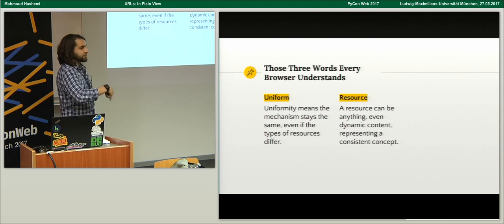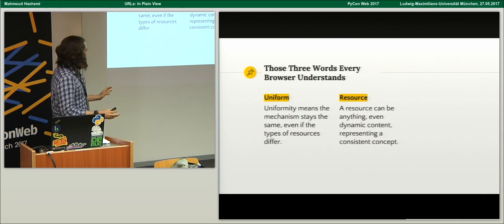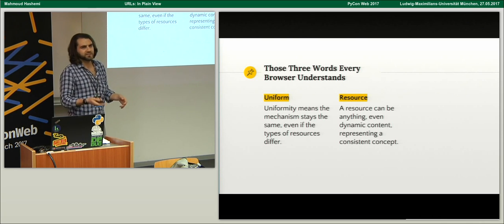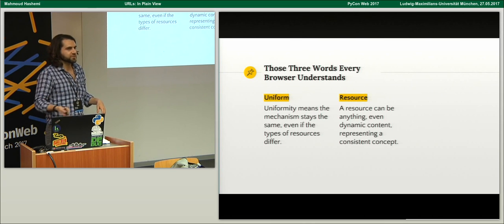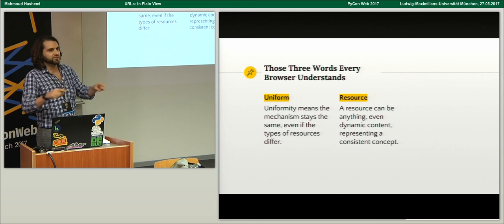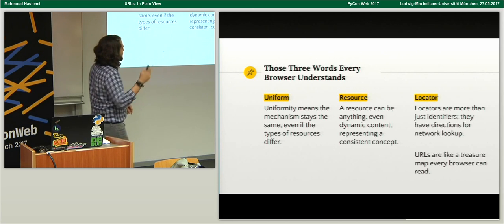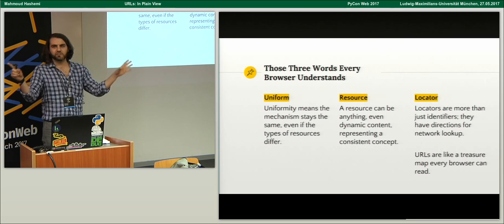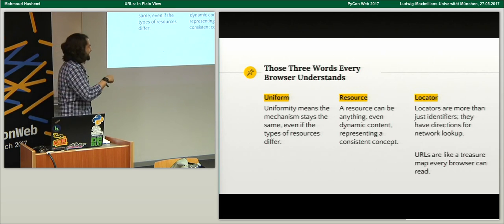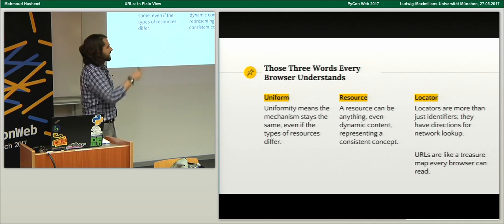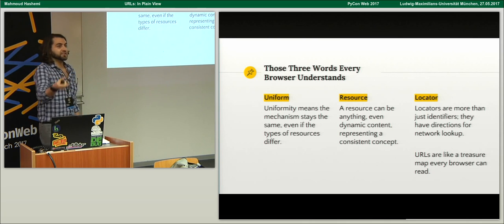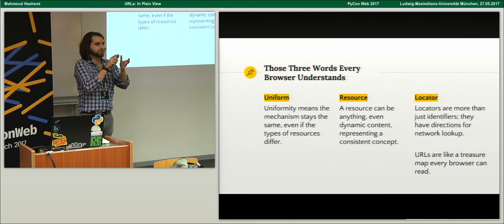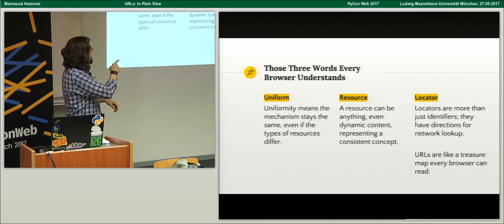It points to a Resource. A resource is basically the most general term they could find at the time — it could be anything, even dynamic content that's changing, as long as it represents a consistent concept. The example they give is the weather: the page is always changing, but it's a resource — the weather report — not a particular snapshot in time. And finally, it's a Locator. An identifier says something has an identity; a locator goes further and says here's how to find it on the network. So URLs are like a treasure map that every browser and program can understand and navigate: Uniform Resource Locators.